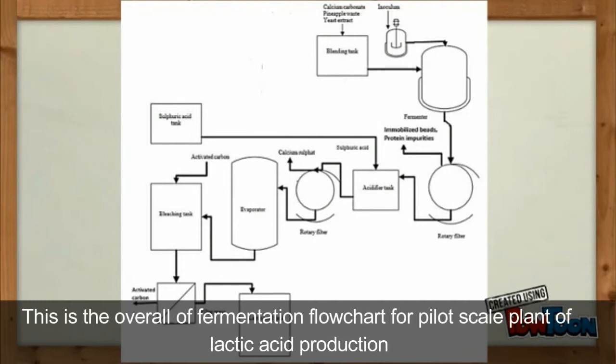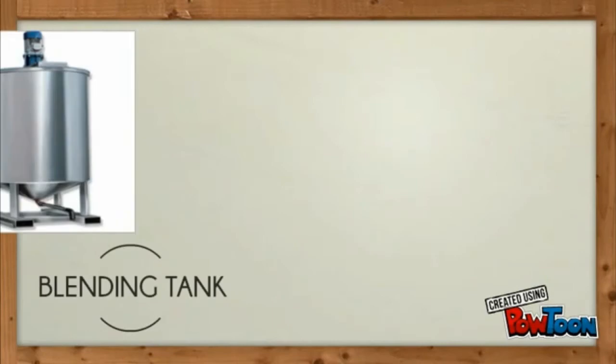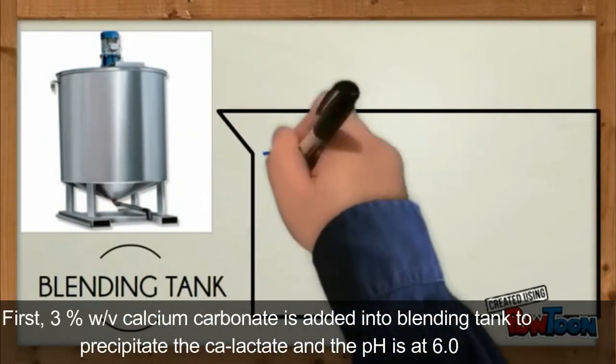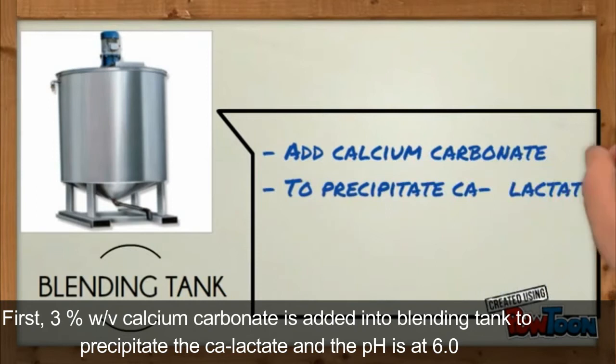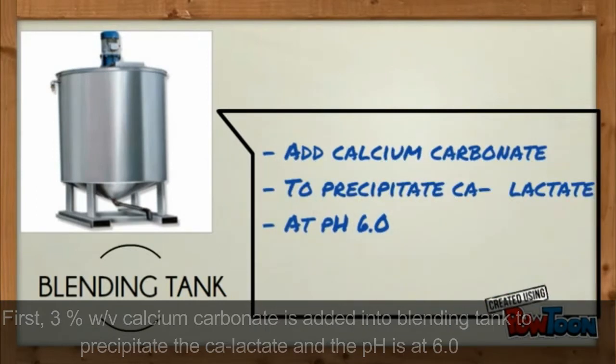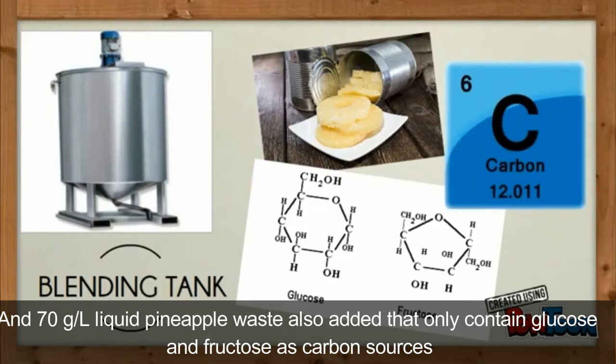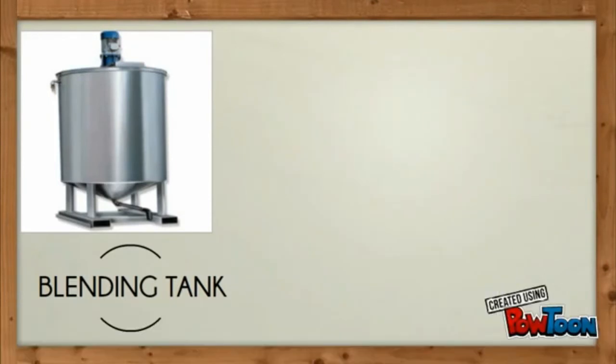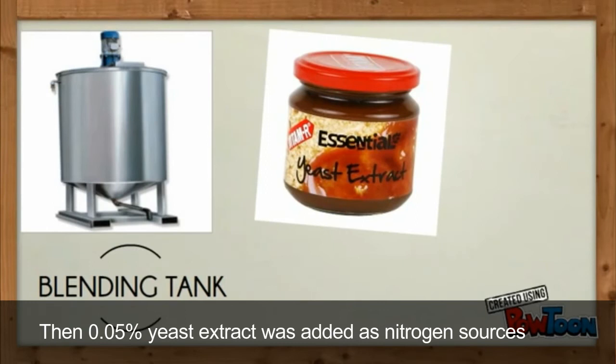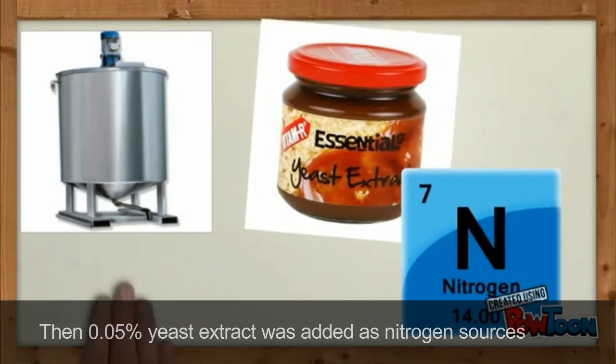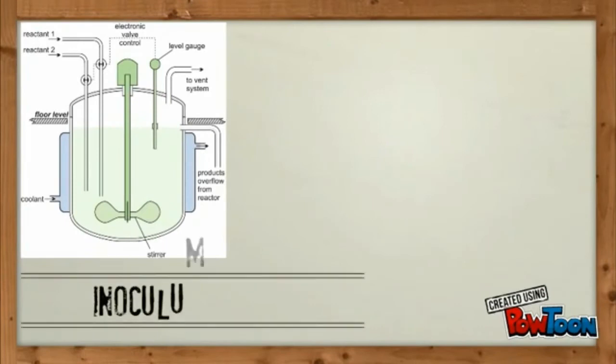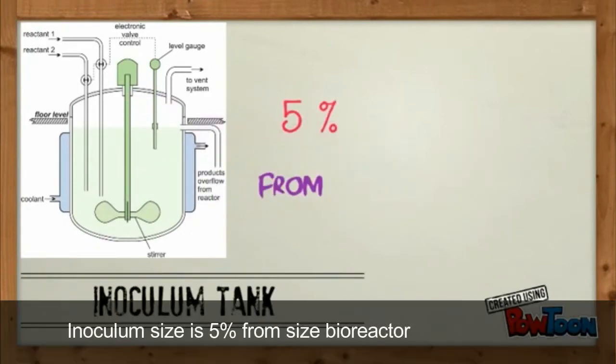This is the overall augmentation project for pilot scale plant of lactic acid production. First, 3% weight over volume calcium carbonate is added into blending tank to precipitate the calcium lactate and the pH is at 6.0. And 73 grams per liter liquid pineapple waste is also added that only contains glucose and fructose as carbon sources. Then, 0.05% yeast extract was added as nitrogen source. The film size is 5% from size of oil liter.